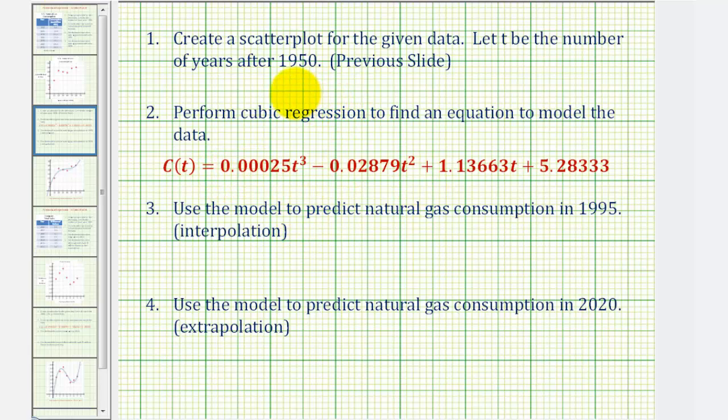Remember, T is the number of years after 1950. So to find the value of T for 1995, T is going to be equal to 1995 minus the base year of 1950, which is equal to 45. So to make this prediction, we want to find C of 45, so we'd substitute 45 for T.